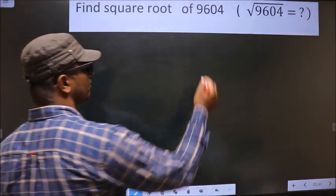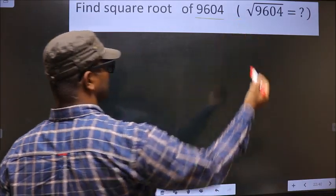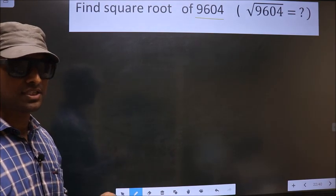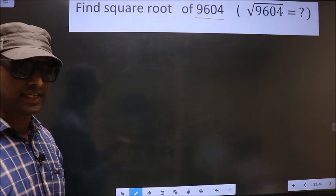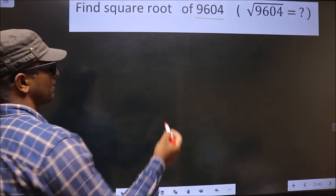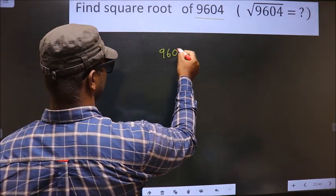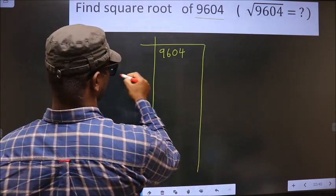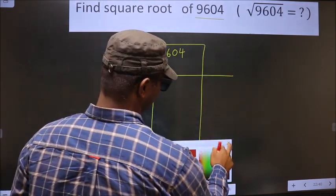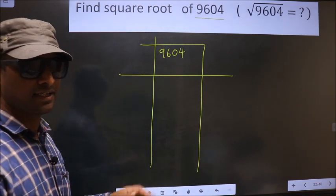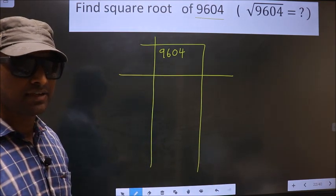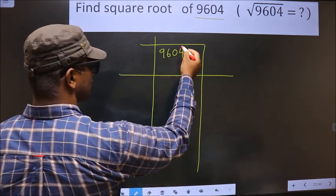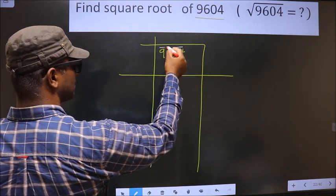Find the square root of 9604. To find the square root by long division method, first we have to frame it in this way. See, that is 9604. Next, we should divide the given number into pairs starting from this side, so these two numbers one pair and these two numbers one pair.